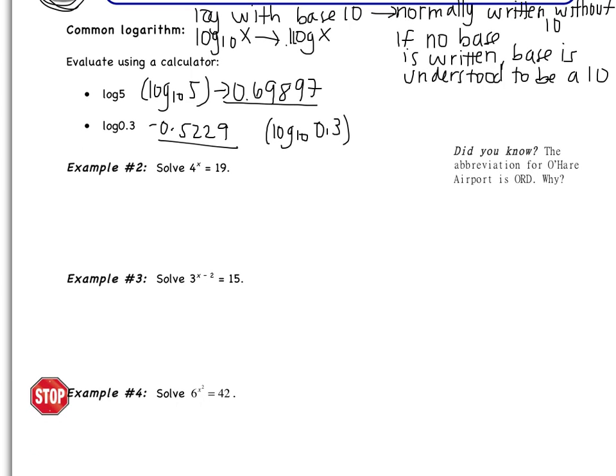Now the way that we're going to use this is we're going to solve equations using these common logs. So we're going to look at example number 2. It says solve 4 to the x equals 19. Now normally in a problem like this, we would attempt to get both sides of the equation in terms of the same base. So we would try to get something like 4 to the x equals 4 squared. Because the bases were the same, I could say x equals 2.